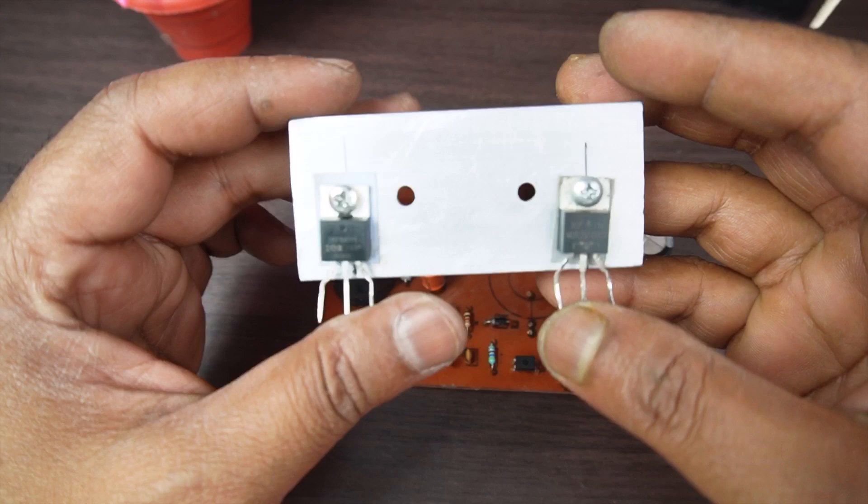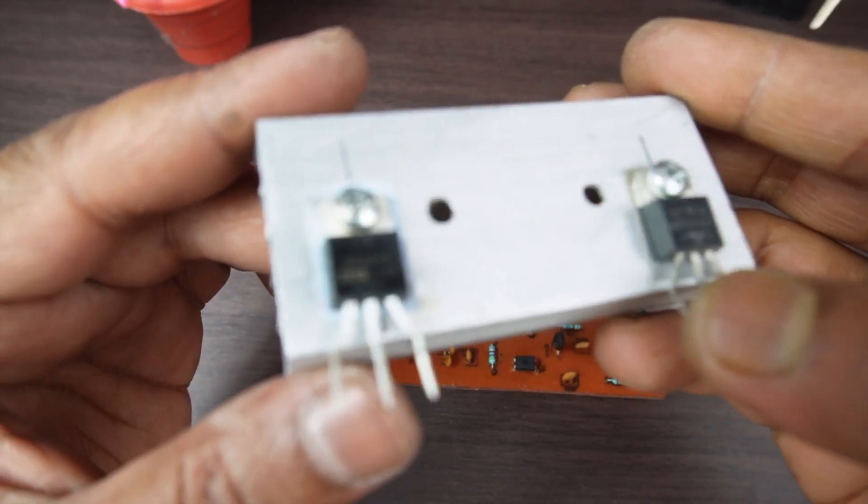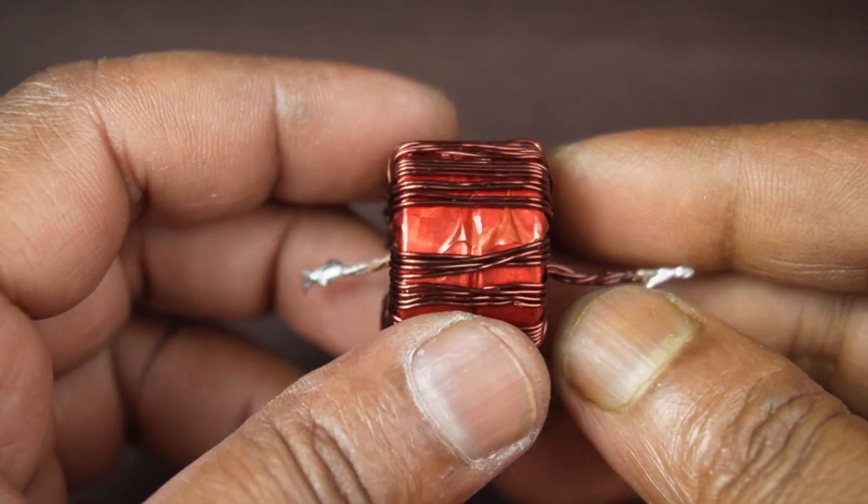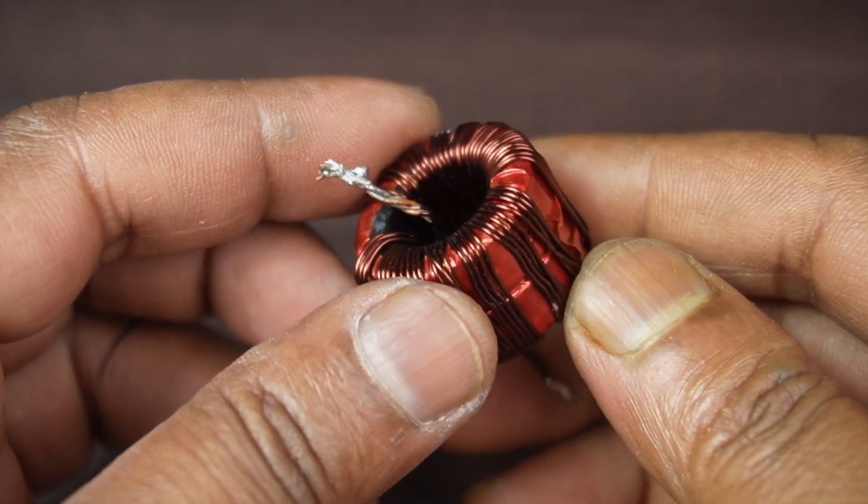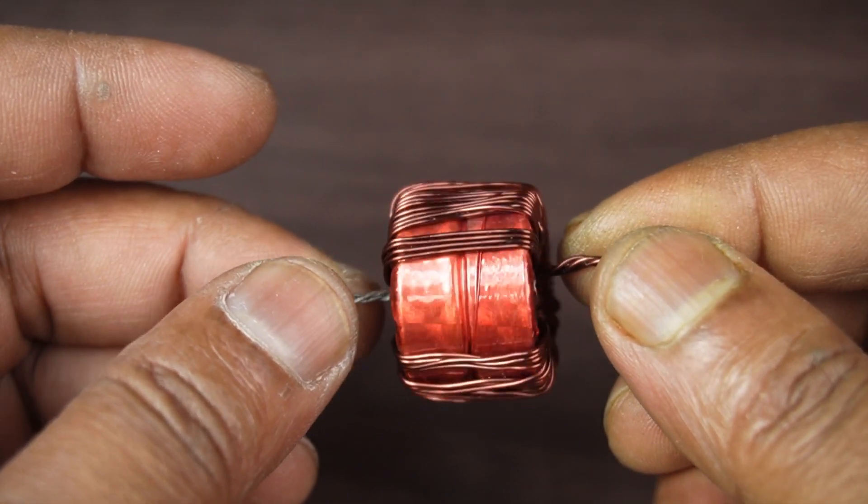Here is the MOSFET IRF-4115, and here is the 30 Amp Dual Schottky Diode. The inductor is made with four pieces of 0.3 mm wire wound in parallel, total 15 turn wounded to make it around 50 micro-Henry inductor.